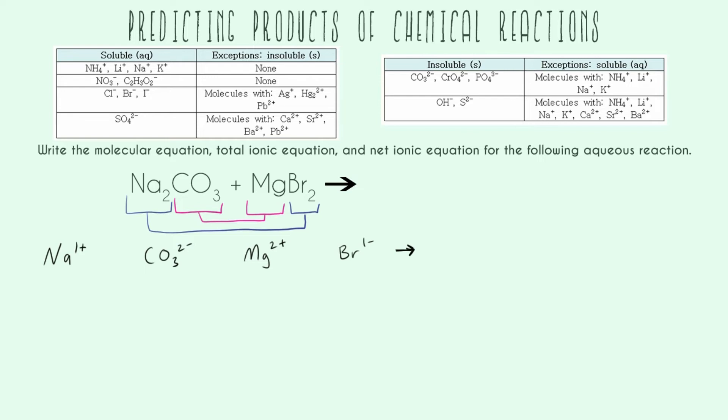So going ahead and starting to fill in my molecular equation, I'm going to complete this swap. So I'm going to have NaBr. I only need one of each because the charge of each one is one, so it balances out just like this. And I'm going to have MgCO3. And once again, I only need one of each because the charge for both of these is plus two or minus two. So they balance each other out with just one of each.